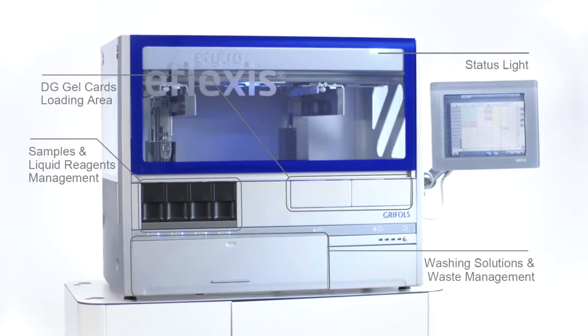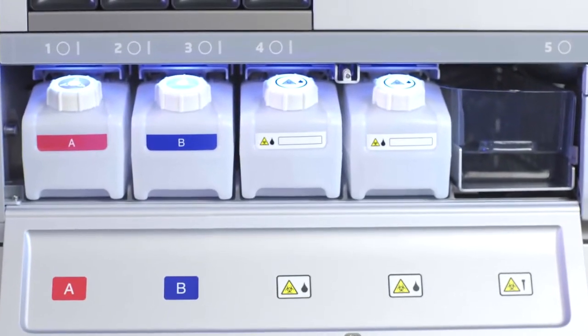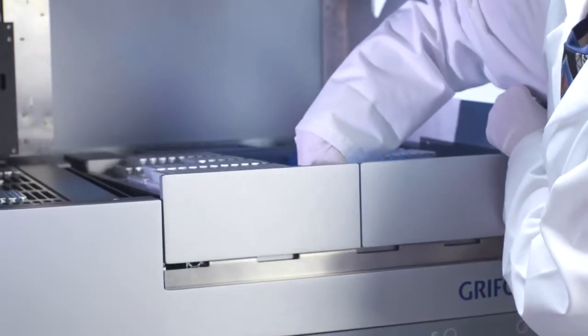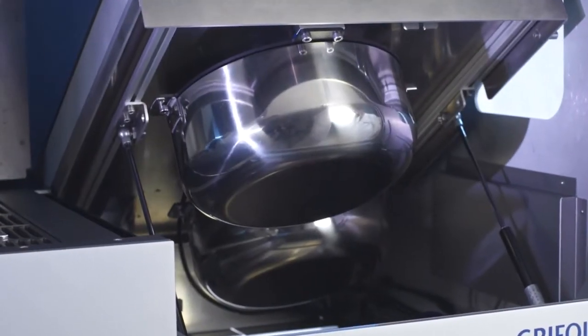The system features a process status indicator light. Washing solutions and waste are managed at the bottom. The two centrifuges are on the right side in the card area.